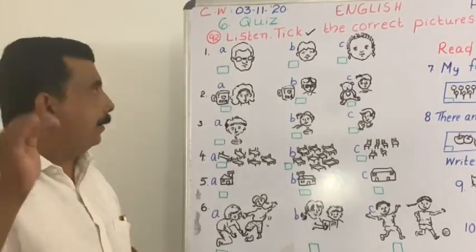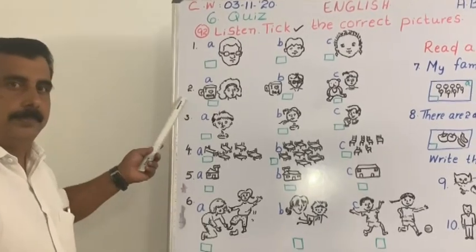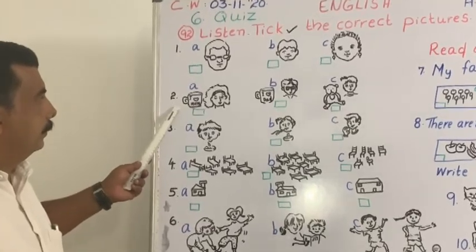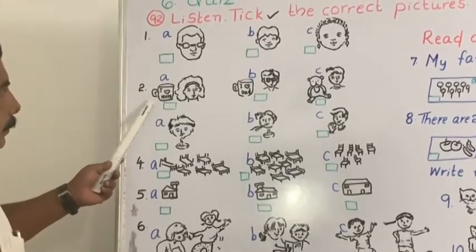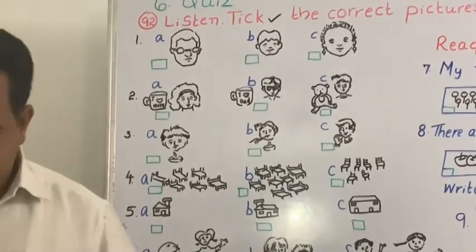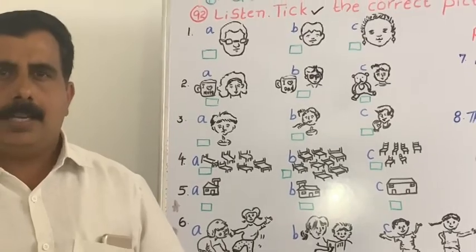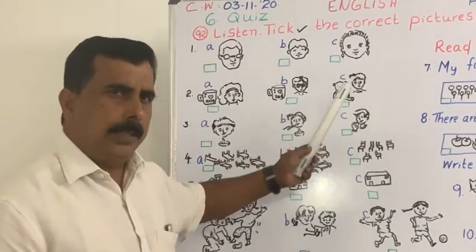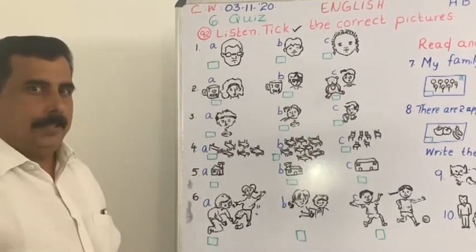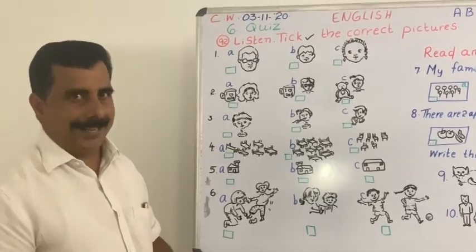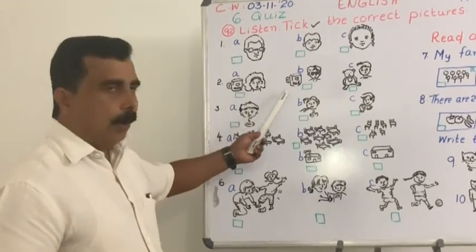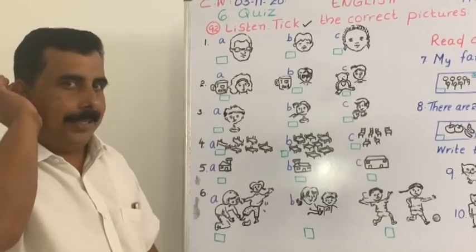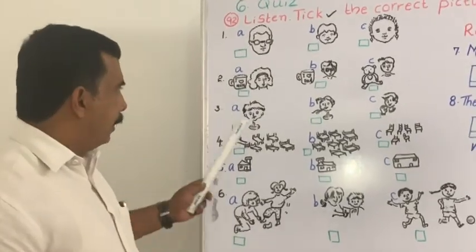Now you are going to listen to question number two. Who is that for? It's for my father — it's his birthday. The question is: who is it for? Is it for my mom, dad, or brother? Someone is celebrating a birthday — the boy made a gift for someone. Think what you listened, recollect, and tick the answer.